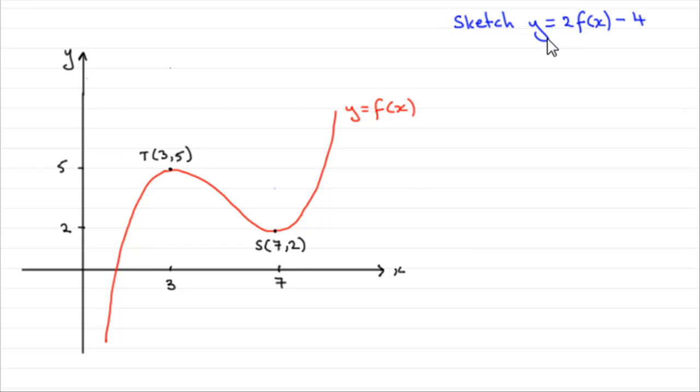And we've got to sketch this graph y equals 2f of x minus 4. Now to do this, what we've got to do is consider two transformations. First of all, we need to consider what happens when you do 2 times f of x, and then what happens when you subtract 4.